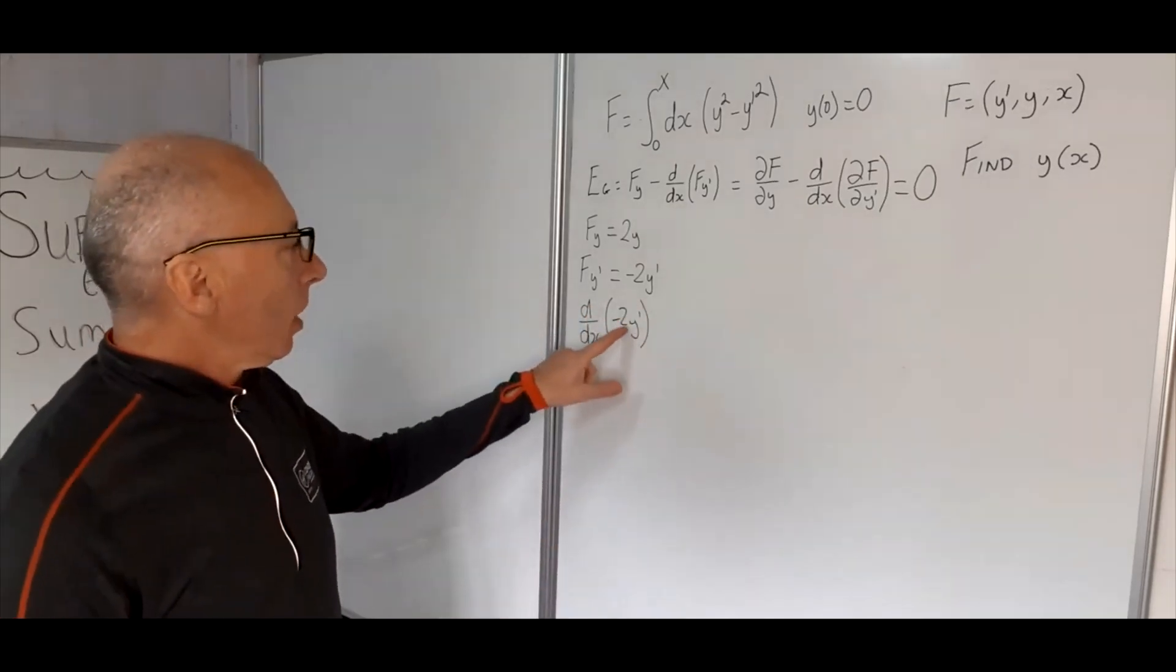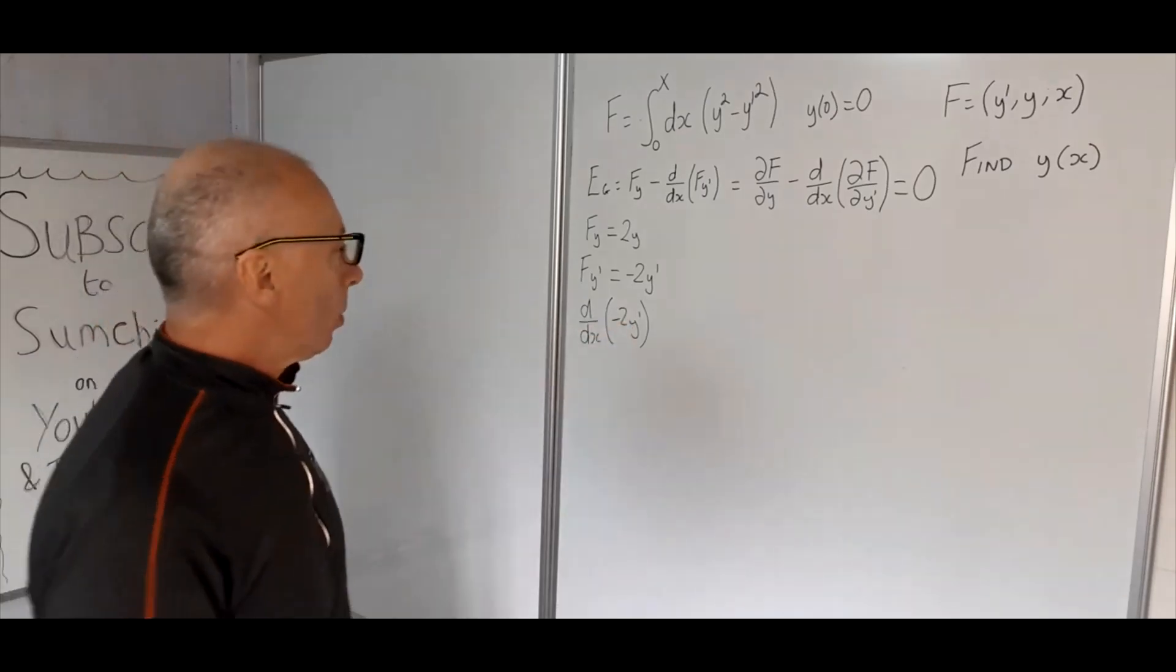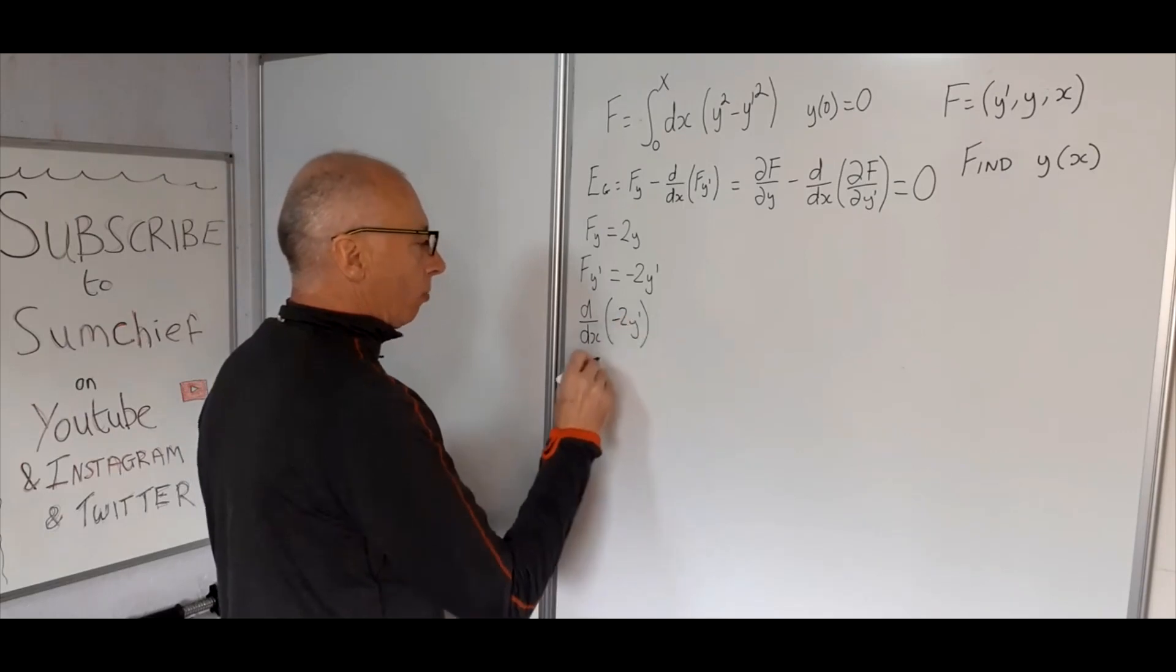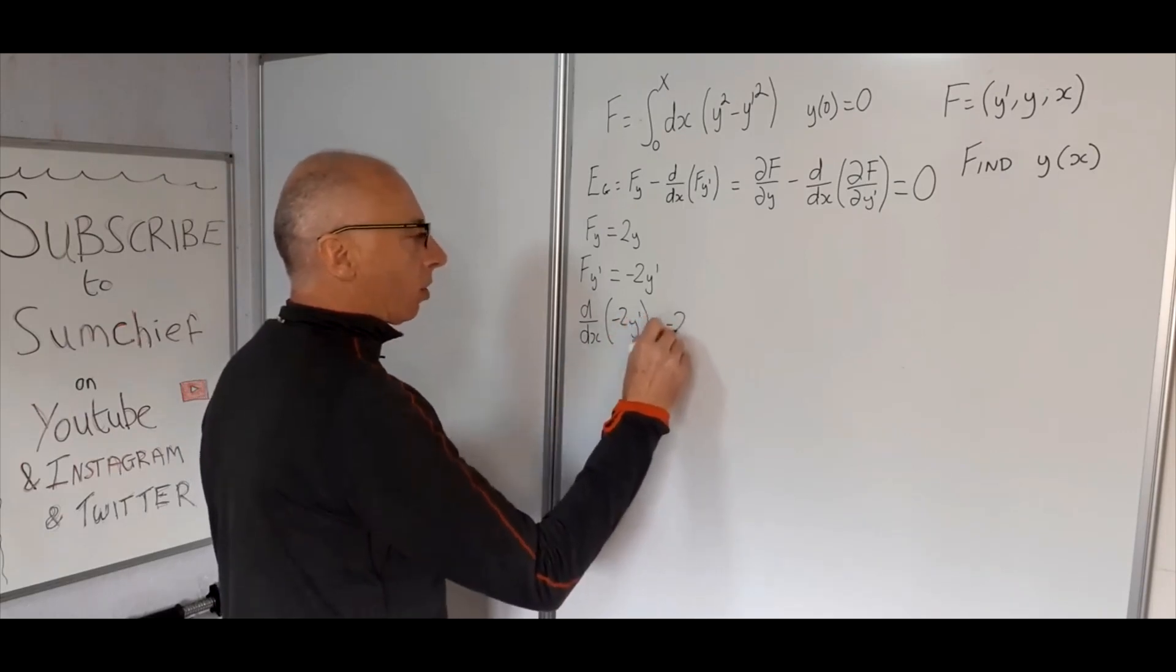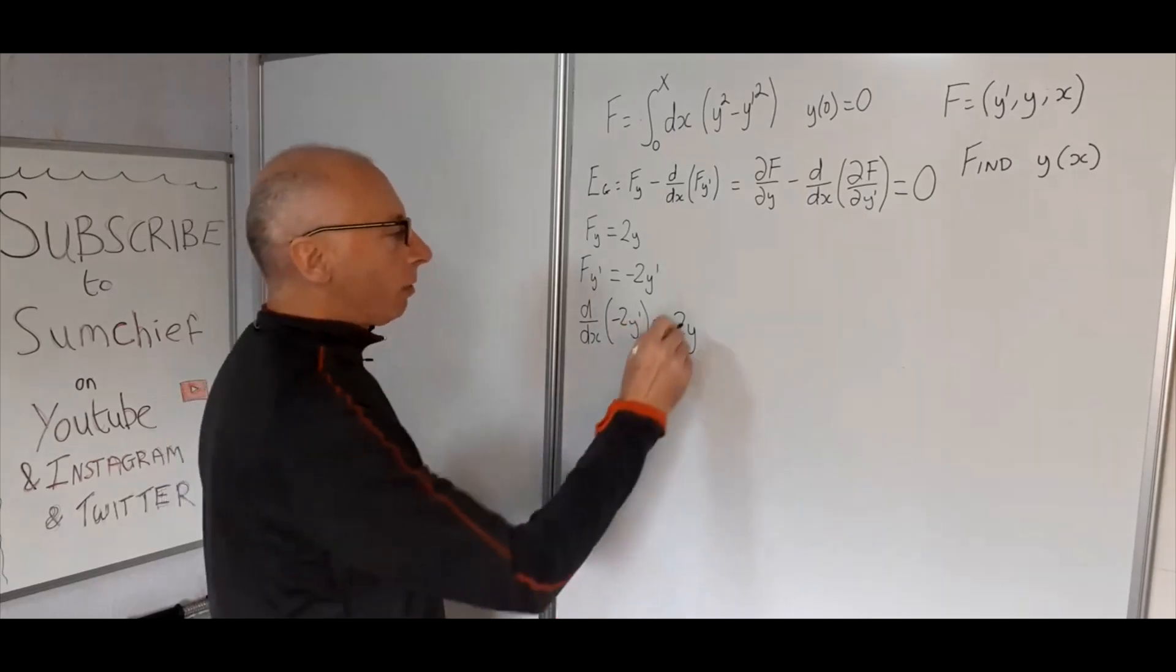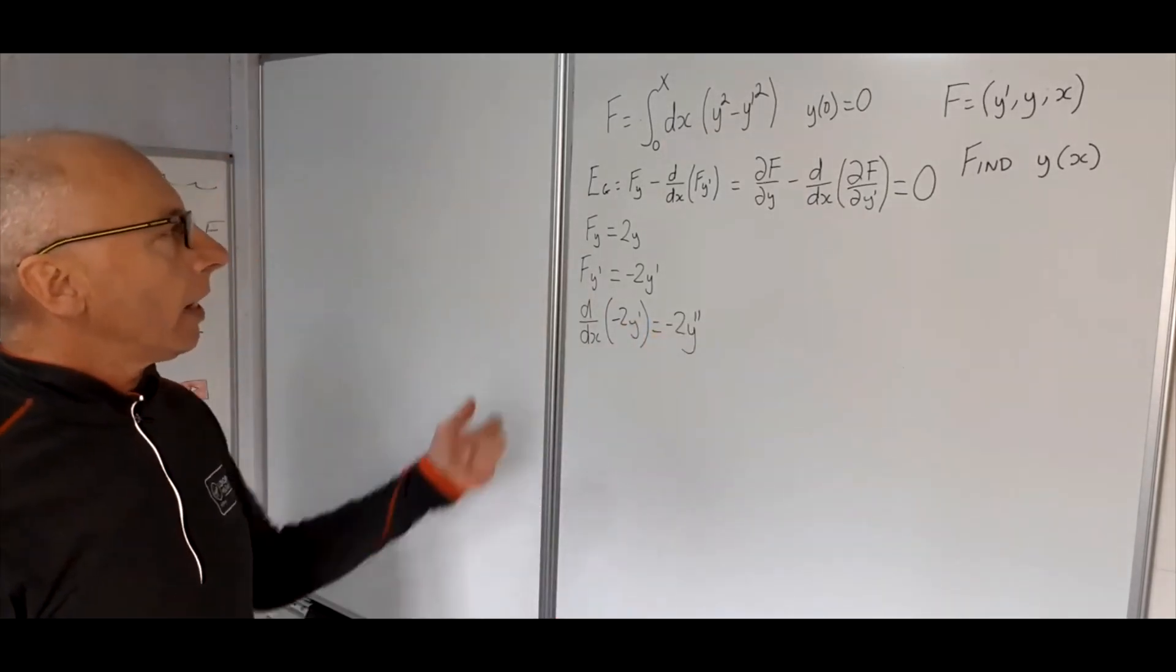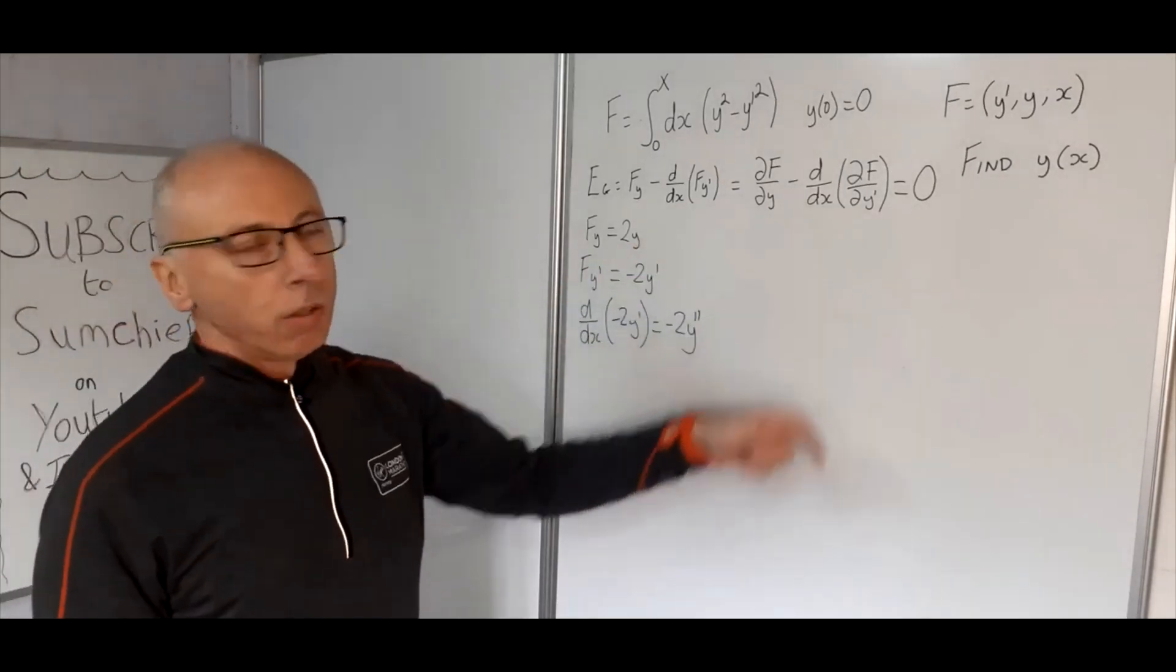And now we need the total derivative of minus 2y prime. Now the minus 2y prime there is only a function of y prime, so there is no need for the chain rule. So now all we do is just write that down as minus 2 and then the y prime just becomes the derivative again, which is y double prime. Okay, so that's the building blocks for our Euler-Lagrange equation.